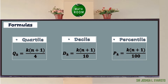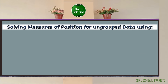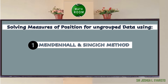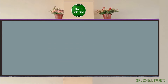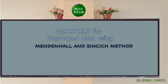In solving for the measures of position for ungrouped data, we can use either the Mendenhall and Sinsic method or linear interpolation. We will first discuss the Mendenhall and Sinsic method in finding the quartile value for ungrouped data.